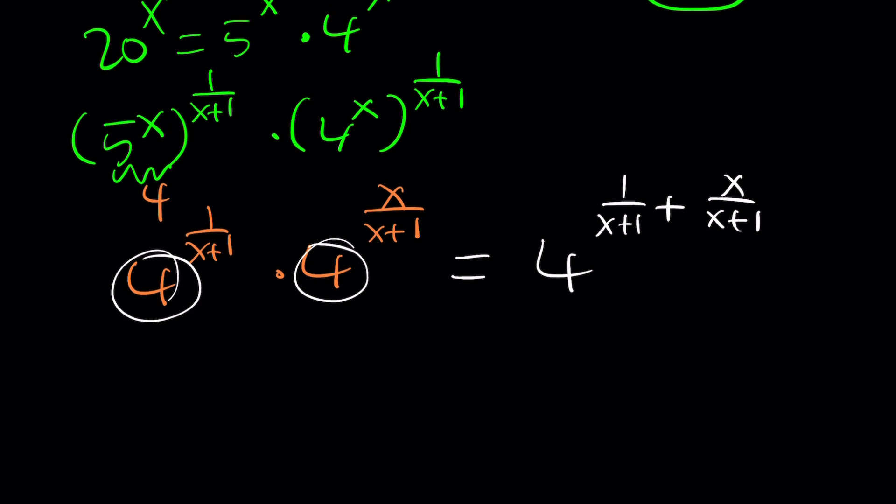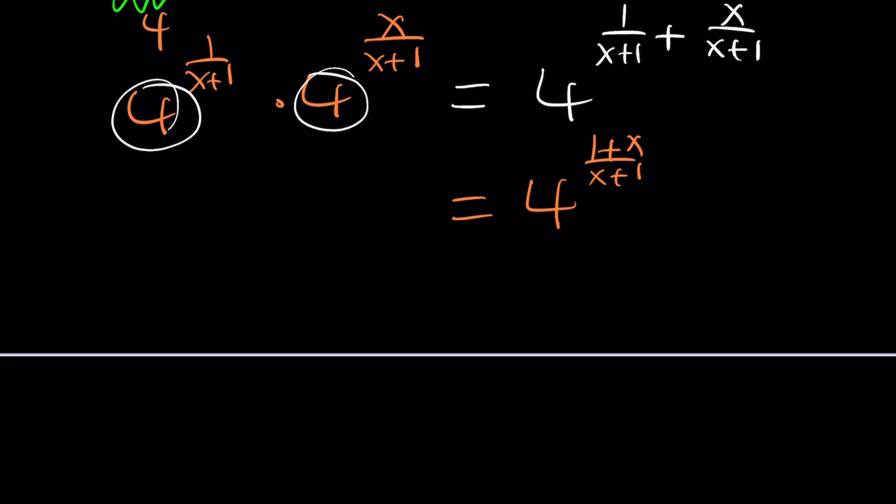Again, another property of exponents. A to the power m plus n. A to the m times a to the n. Or vice versa. Some people say, like, you're going over basic stuff. Yeah, but not everybody knows the basic stuff. That's why I'm going over this thing. Now, we do have two fractions that have the same denominator. So we can add their numerators. But guess what? 1 plus x and x plus 1 are the same. So this is equivalent to 4 to the power 1, which is equal to 4. And we found the same answer.